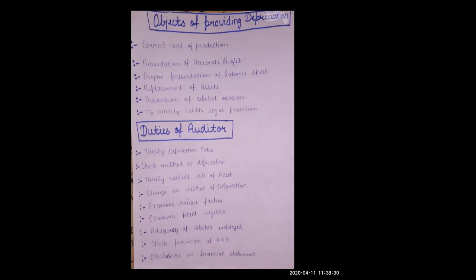Seventh, the auditor must verify the distinction between capital and revenue expenses, checking that capital expenses have been shown correctly. Eighth, the auditor must check the provisions of the articles of association to ensure all provisions are fulfilled. Last, the auditor must check the disclosure in the financial statements — verifying that the balance sheet shows the depreciation charged and the reduced value of fixed assets.